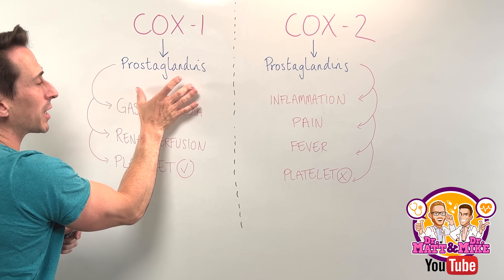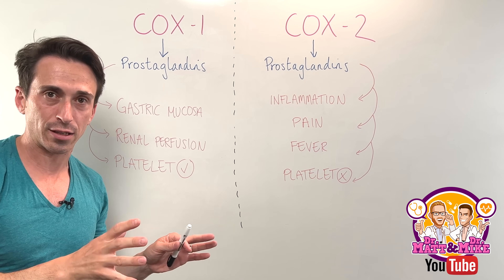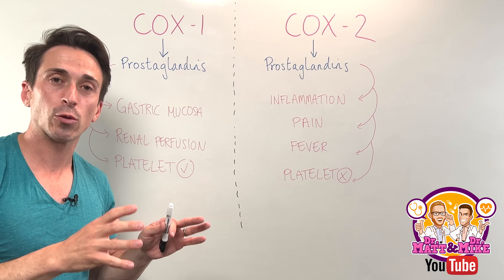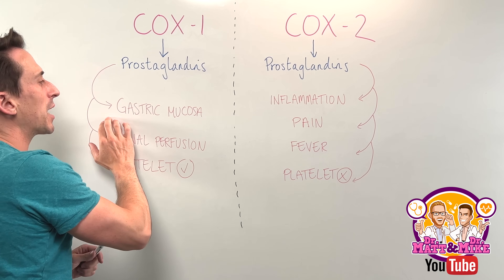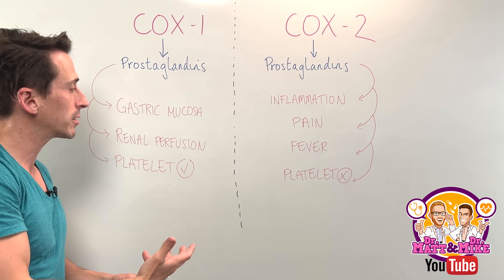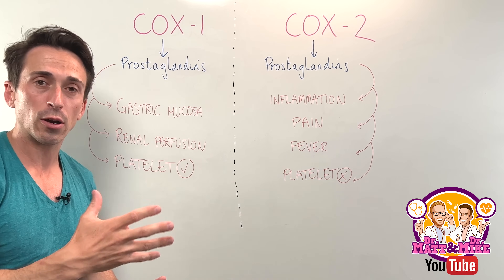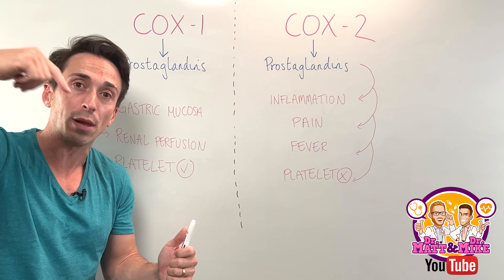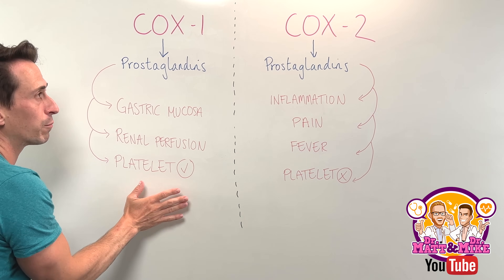The prostaglandins produced by COX-1 are always being activated, and they play really important housekeeping roles. For example, these prostaglandins help maintain our gastric mucosa, stopping the stomach from digesting itself. They also help maintain renal perfusion — telling the blood vessels going into the kidneys to remain dilated so more blood can be filtered — and help in the production of platelets.